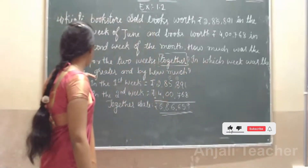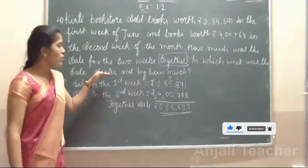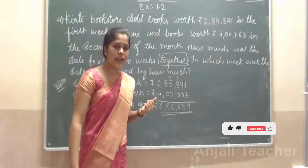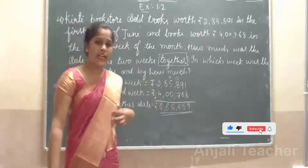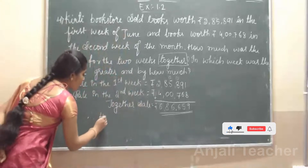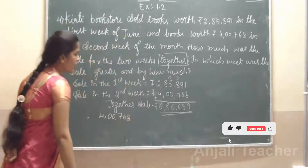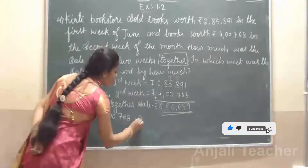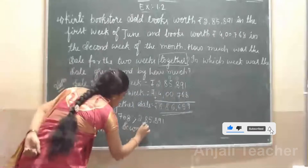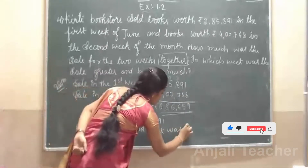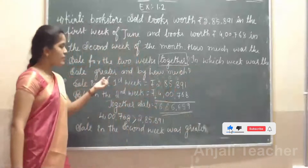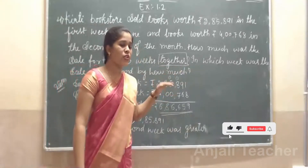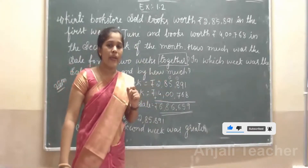Now, next question — what they ask? In which week was the sale greater? In first week, 2 lakhs. In second week, 4 lakhs. The number of digits is the same, so see the first digit: first week starts with 2, second week starts with 4. So 4 is greater — the second week sale of 4 lakhs is greater. You will get by how much the sales differ.